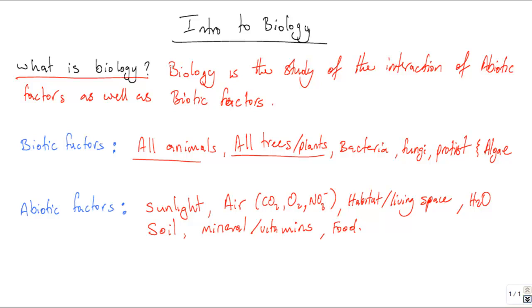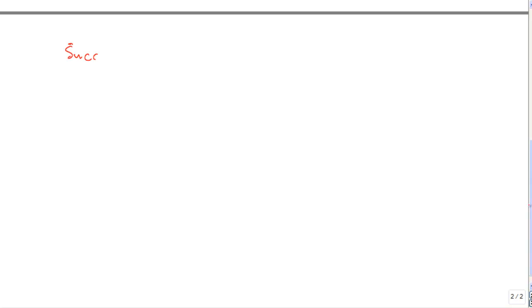It is important to understand these factors because it is the interaction of these factors that allow organisms to succeed, to reproduce, and basically continue life as is. It is the interaction of these factors that allow life to exist. Without these factors, life would cease to exist. And therefore, it is important for the success, reproduction, and continuation of life. Thank you.